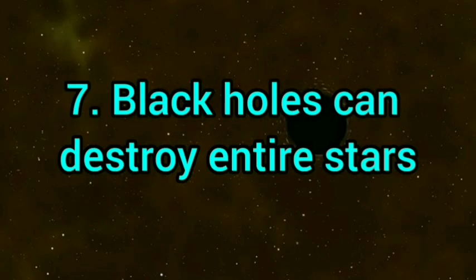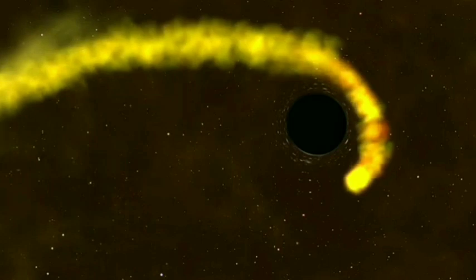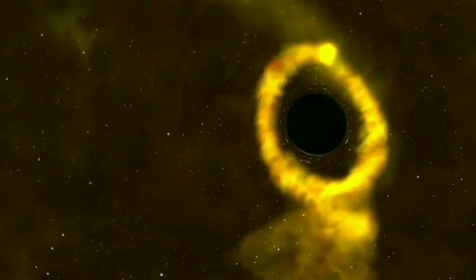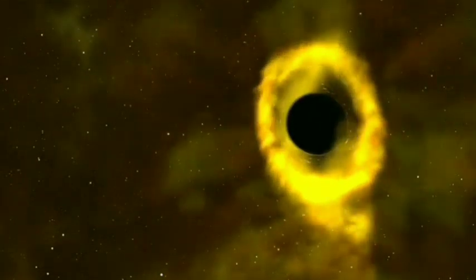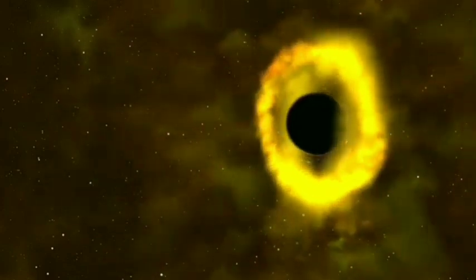Black holes can destroy entire stars. When a star gets too close to a black hole, it gets ripped apart by the black hole's intense gravitational pull. This process is known as a tidal disruption event. And during this event, an enormous amount of energy can be released.